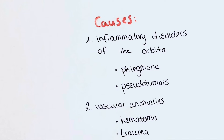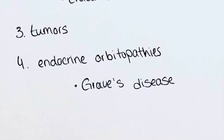The second group are vascular anomalies. These include hematomas of the orbita and trauma where the arteria ophthalmica and vena ophthalmica, or alternatively the cavernous sinus, are injured. This often leads to a pulsating exophthalmos where the systolic pulse can be seen and felt in the eye, which can lead to atrophy of the optic nerve.